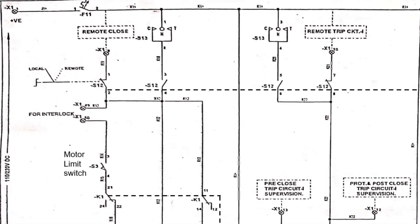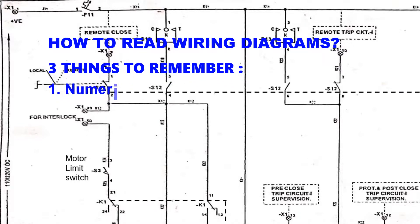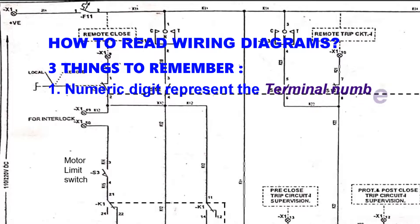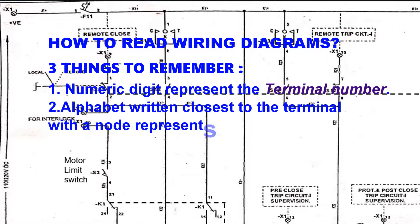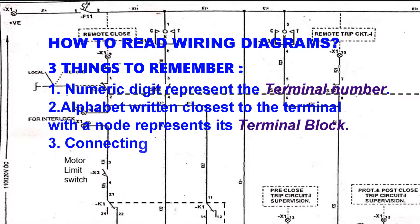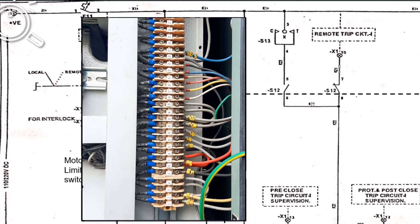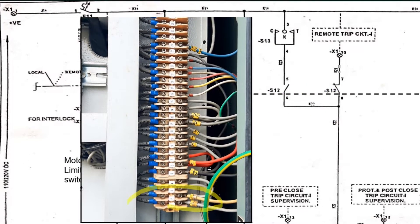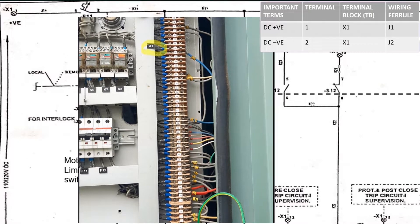Let us start and closely look at the top left of this network diagram. Always remember three things. First, the numeric digit shown always represents the terminal. Second, the alphabet written closest to the numeric digit with a NOR represents the terminal block. And last, the connecting branch of the network represents the wiring ferrule. From this, we can say that DC positive is given on terminal 1 of the X1 terminal block having a wiring ferrule J1.